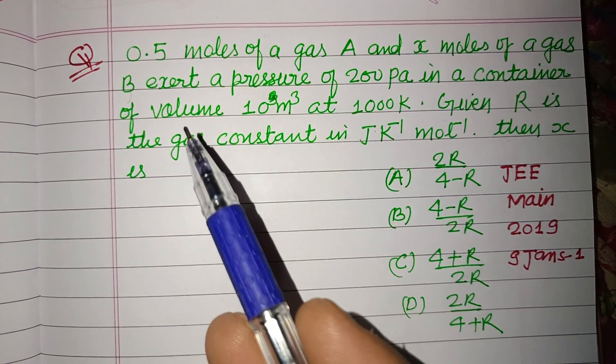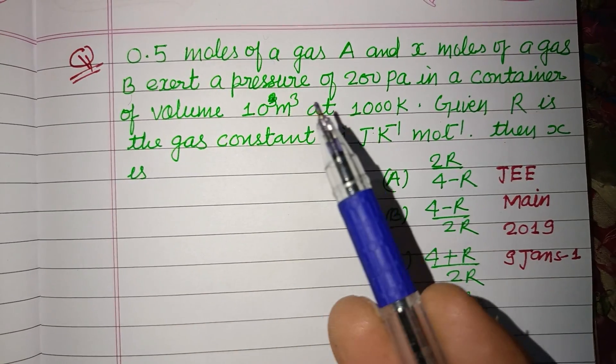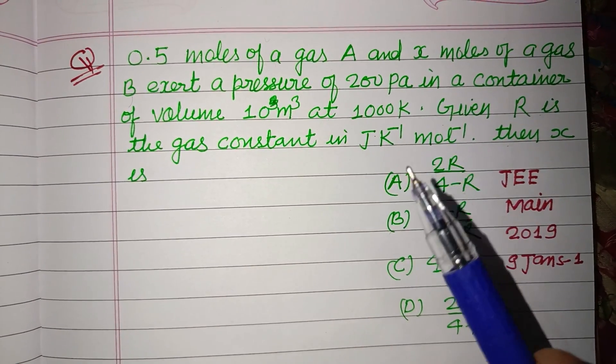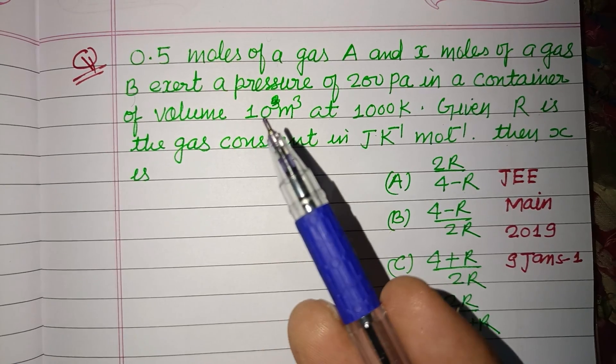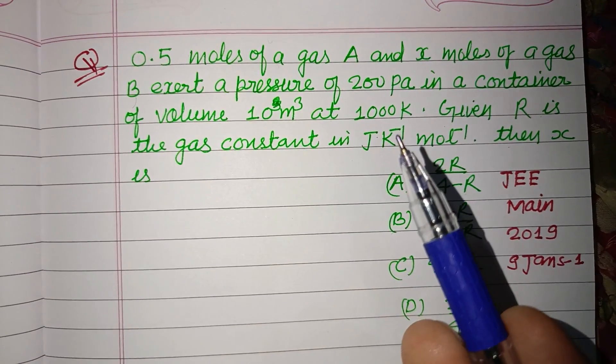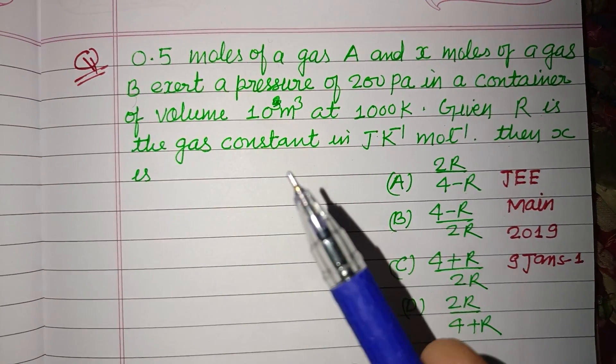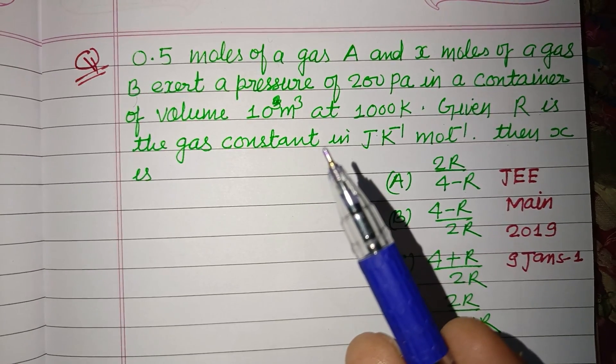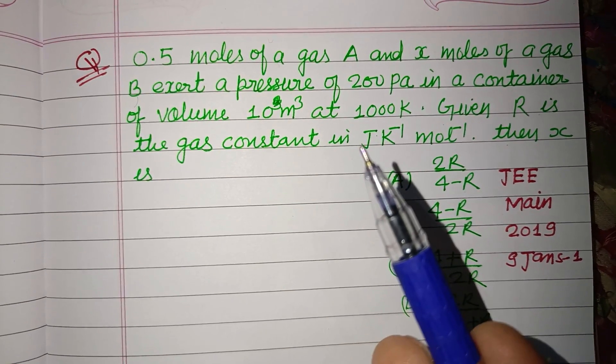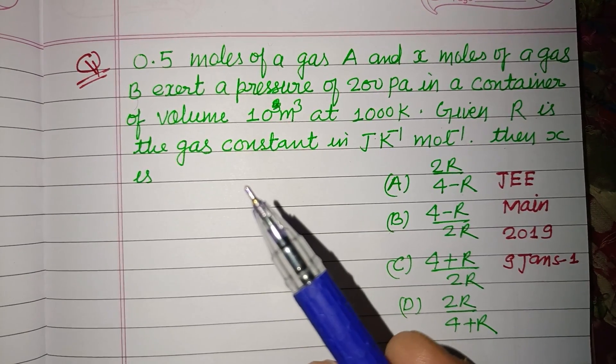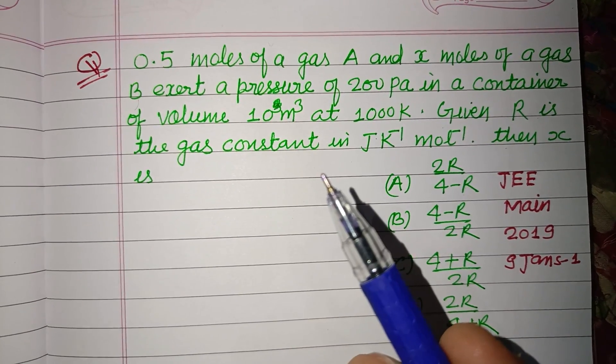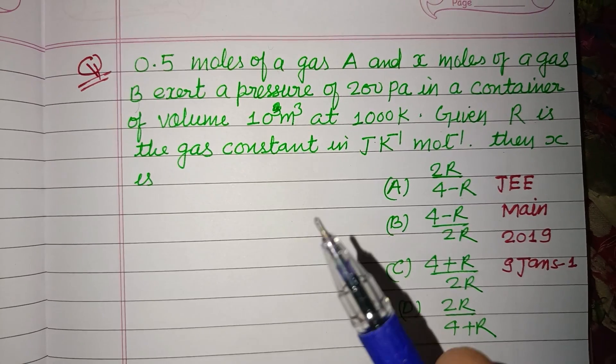9th September shift 7. 0.5 moles of a gas A and x moles of a gas B exert a pressure of 200 Pascals in a container of volume 10 cubic meters at 1000 Kelvin, given R is the gas constant in Joules per mole Kelvin, then x is,